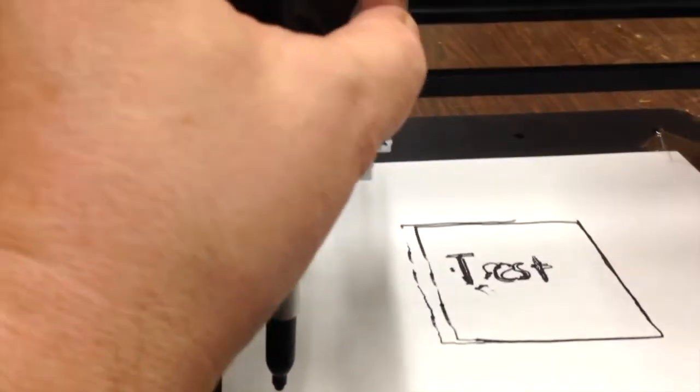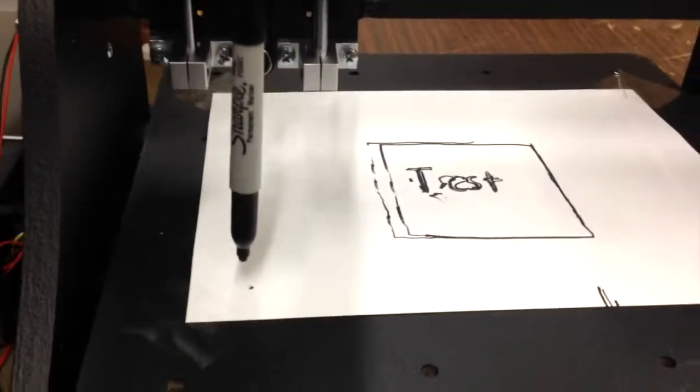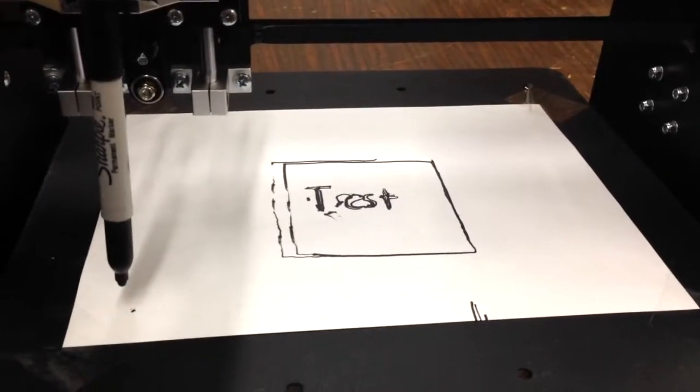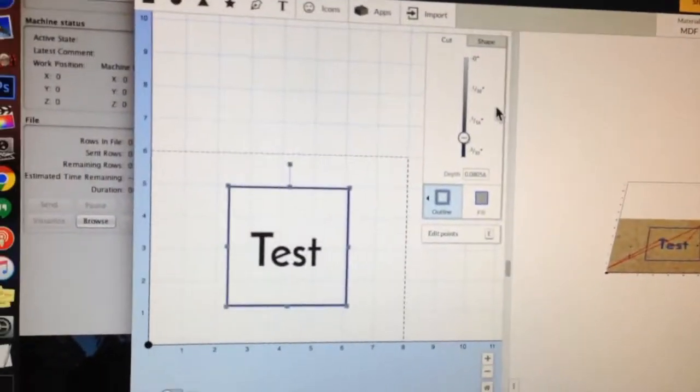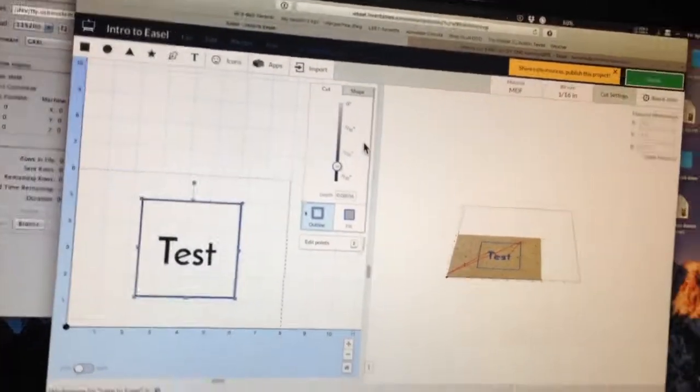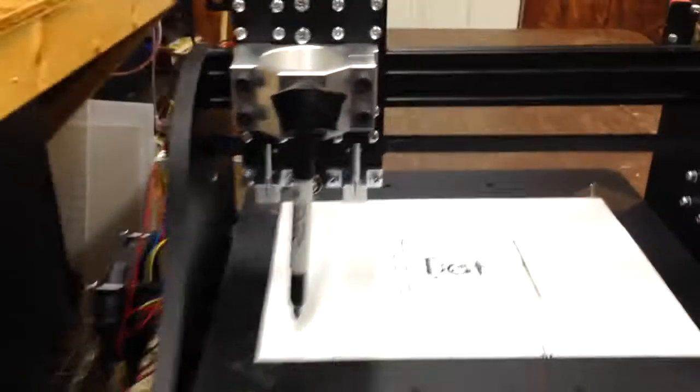I gotta work up something to solidly attach this, but yeah, it's working. It's printed what it's supposed to print. Yeah, looks great. That's what it was supposed to print from Easel by Inventables, and that's what it did print.